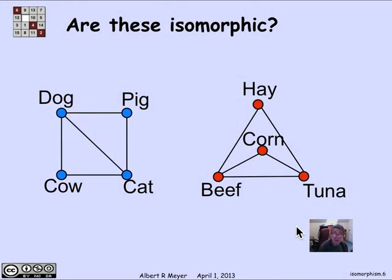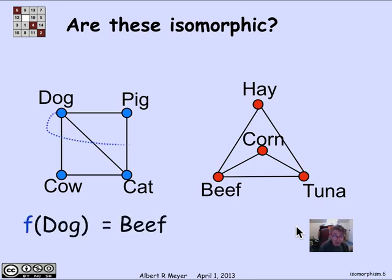Here are two graphs, and I claim that they are isomorphic. On the left we've got a bunch of animals: dog, pig, cow, cat. And on the right we have a bunch of animal foods: hay, corn, beef, tuna. I'm going to define a bijection from the vertices on the left to the vertices on the right. The dog vertex on the left corresponds to the beef vertex on the right, so f of dog is beef.